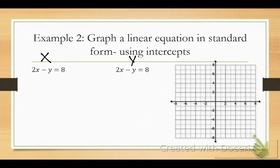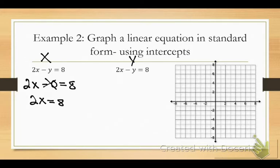I want to see how far you can get finding each intercept and then graph it on the same graph. How did I solve for x? What did I plug in for y? If you're solving for x, you plug in zero for y. So: 2x minus zero equals 8 — this completely cancels out. So 2x equals 8. Divide by 2 — x equals 4.